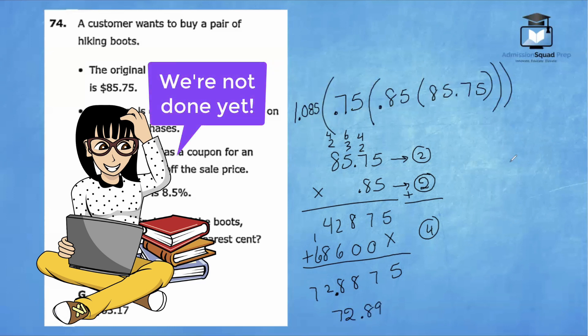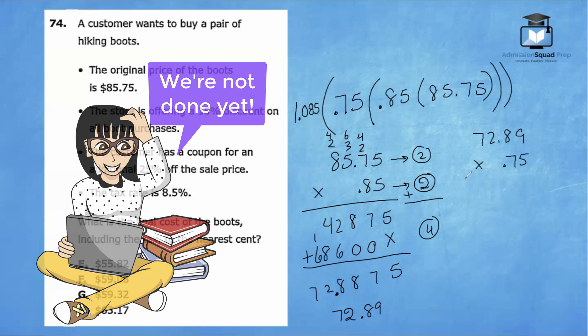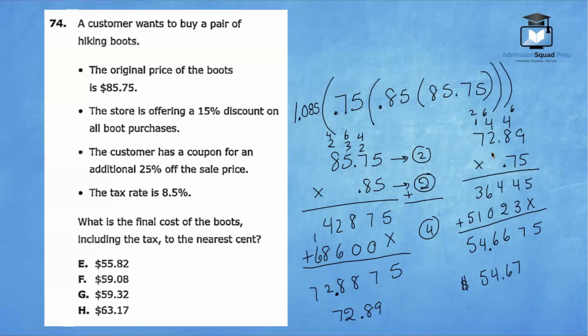Now we're going to go ahead and multiply 72.89 by 0.75. Let's get started. After multiplying 72.89 times 0.75, remember the customer is paying 75% of the price after applying the 25% discount. We're left with $54.67.